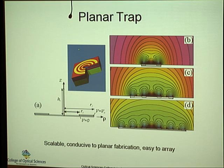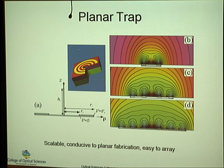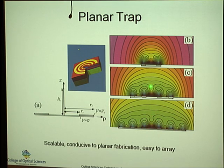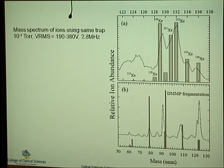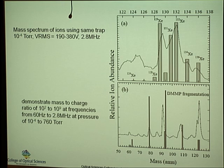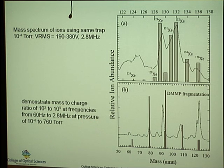A couple of years ago, we decided that building cylindrical-geometry ion traps was too difficult due to the multiple layers involved. So we came up with a simpler version called the planar ion trap, which consists of only a set of ring electrodes on a plane. This device requires only one level of lithography and etching. The quadrupole potential sits at the tip of the ring electrode, and we fabricated several of these devices and demonstrated that they work as mass spectrometers, producing mass spectra for helium and DMMP at different frequencies and pressures.